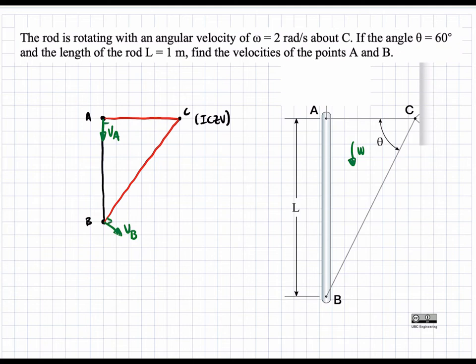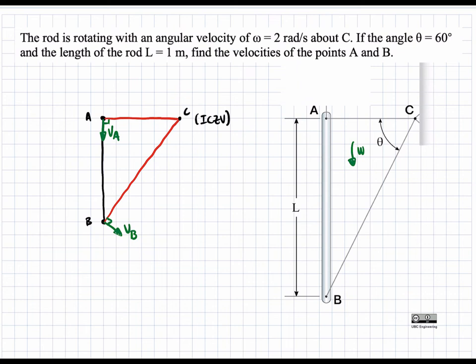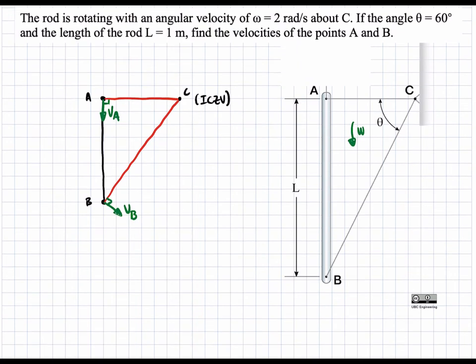So again, these two are right angles, because the velocity is perpendicular to that radius vector. So let's go ahead and calculate the magnitudes of these velocities.